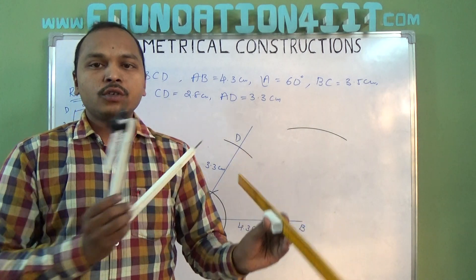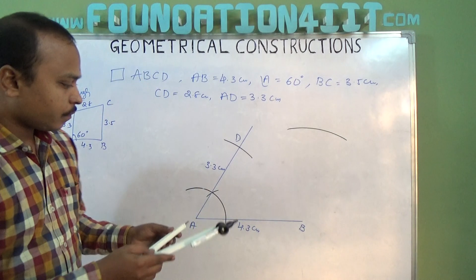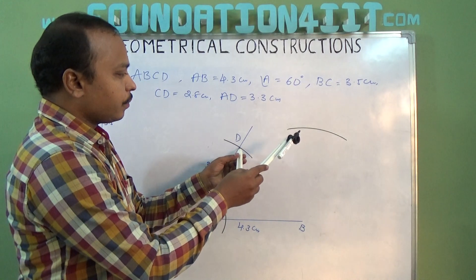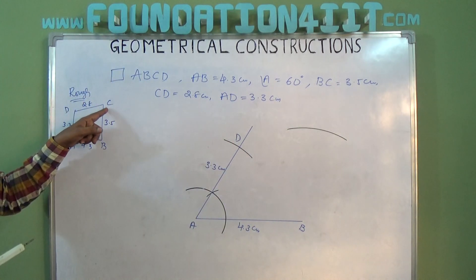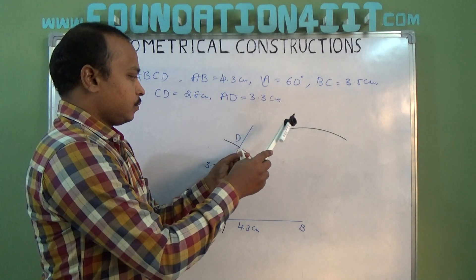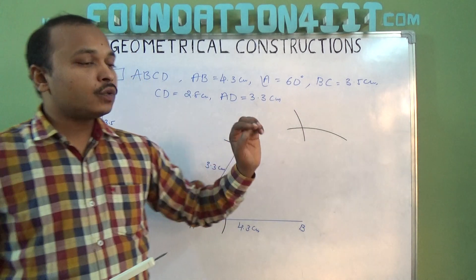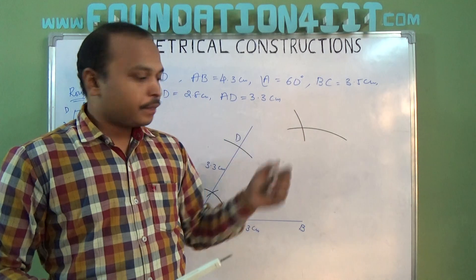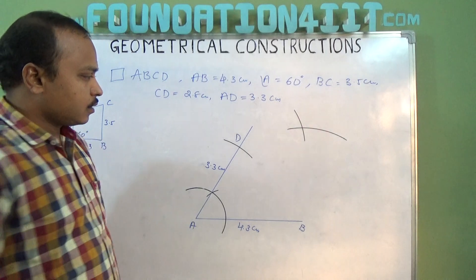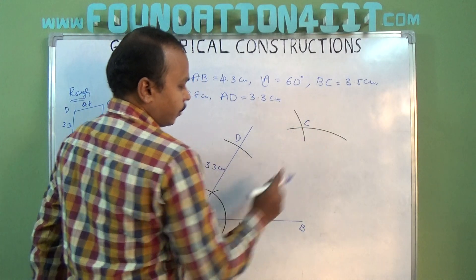0 to 2.8, take that one from D because D to C is 2.8 centimeters. Now cut this arc. Where the two arcs join, that is vertex C. A, B, C, D all we got.